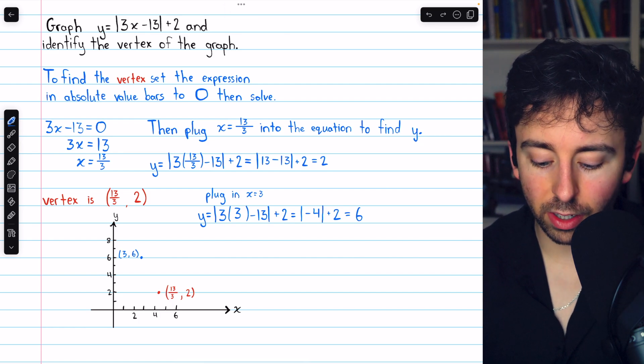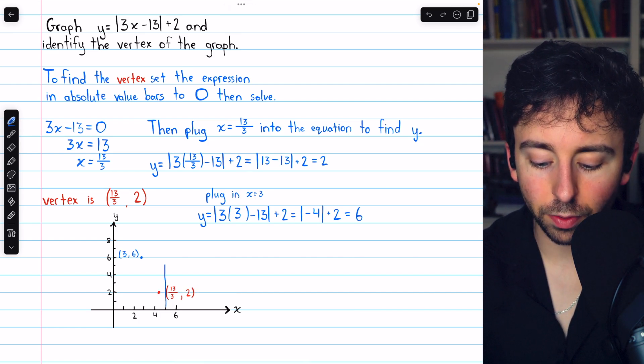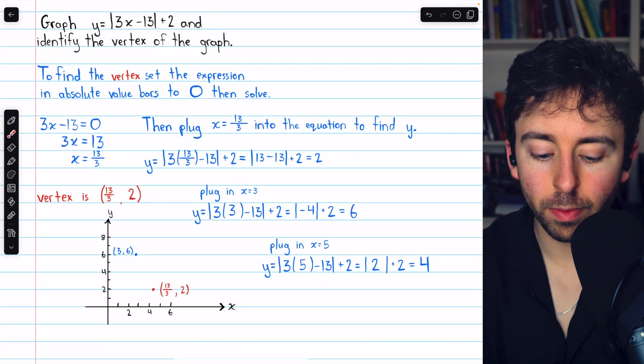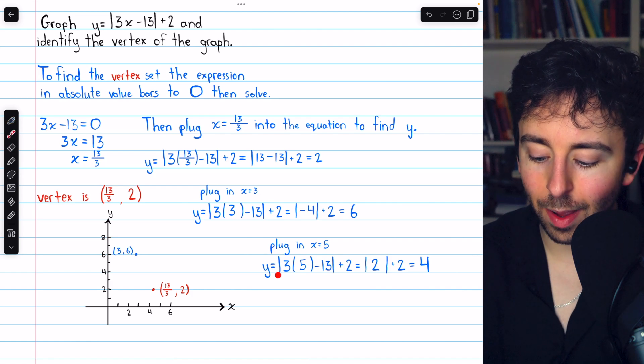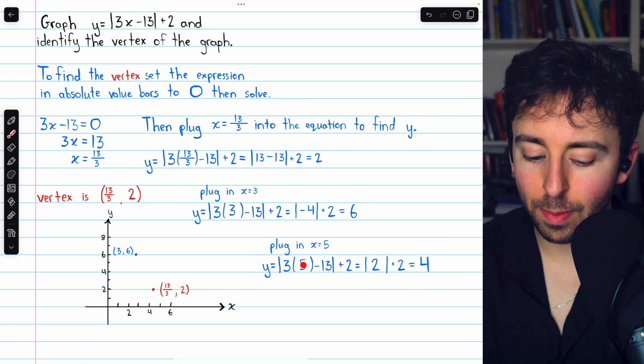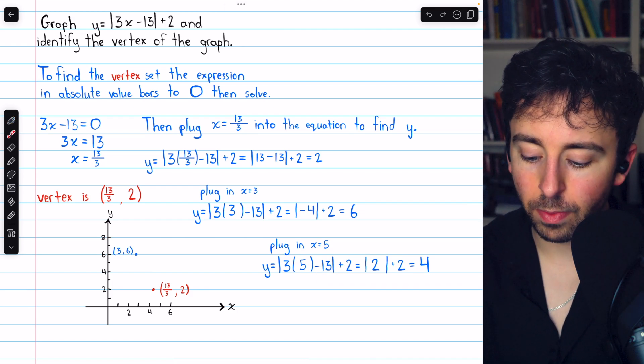Now let's plug in something to the right of the vertex. Let's say we plug in x = 5. So just like before, we take this equation, but replace x with 5. So we have y equals the absolute value of 3 times x, but x is 5, minus 13, and plus 2.